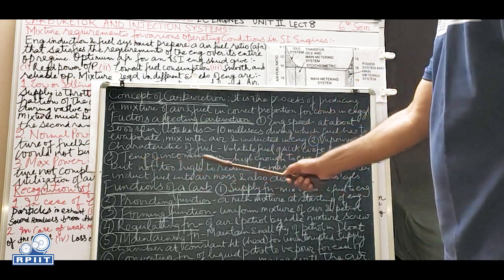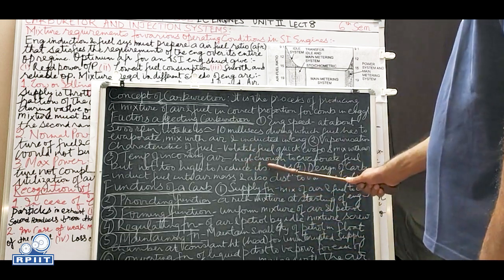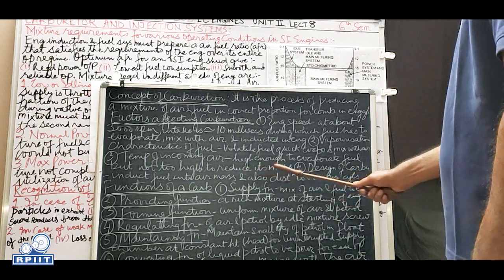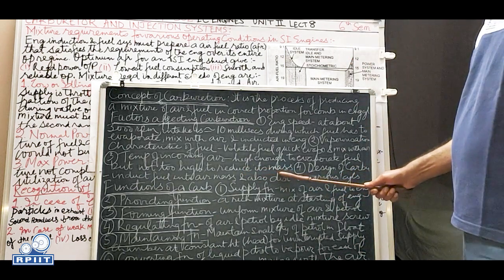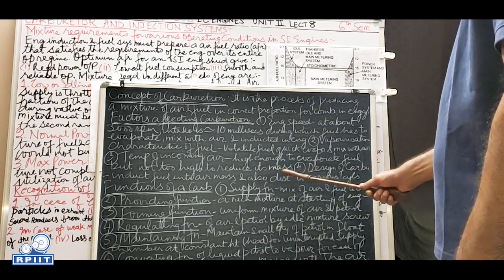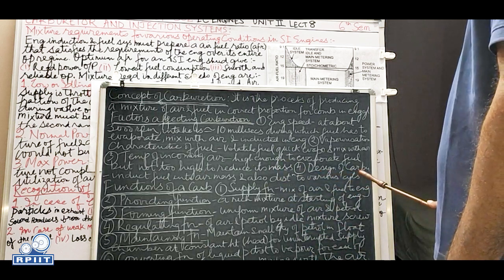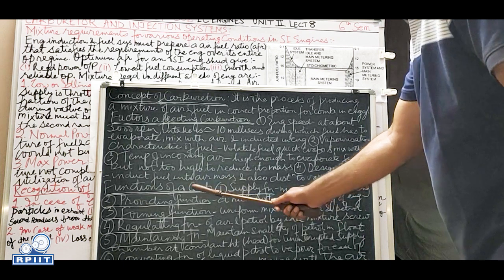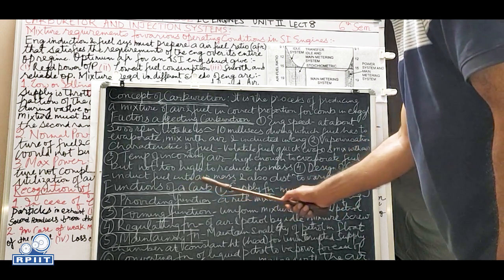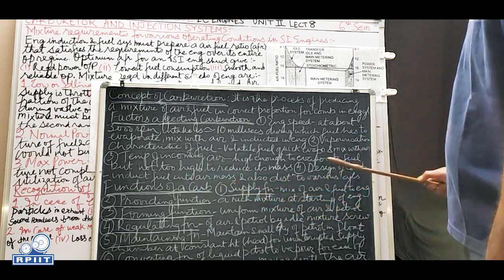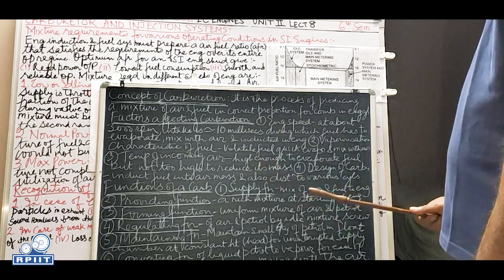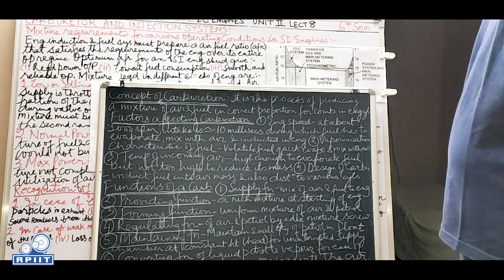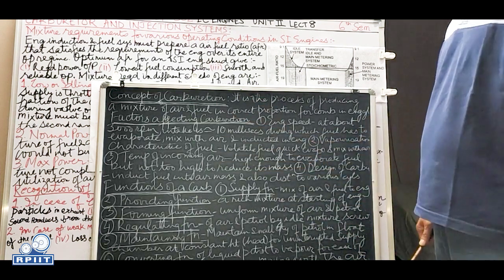Third factor: temperature of the incoming air - it should be high enough to evaporate the petrol, but not too high as to reduce its mass or cause premature burning. Fourth factor: design of the carburetor. The design should ensure it can induct the fuel into the air mass and also distribute the mixture to the various cylinders through the inlet manifold.